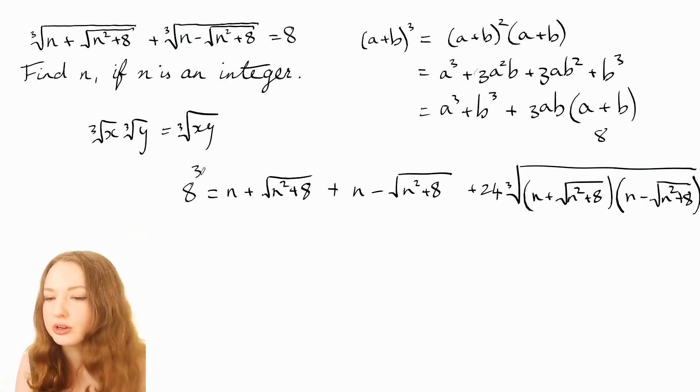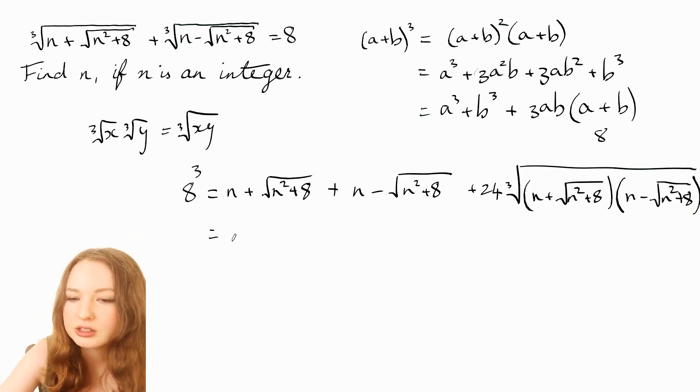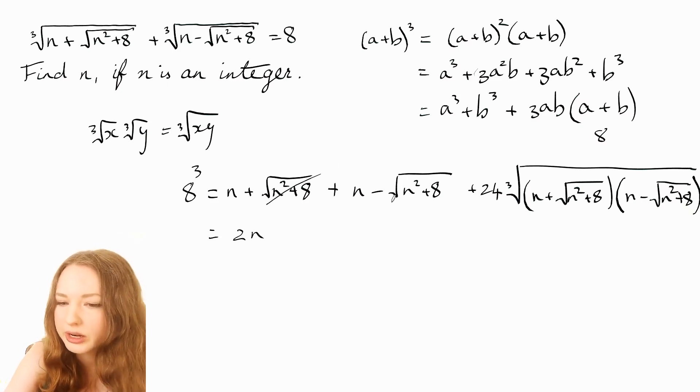Now let's see what we can do to simplify this. So we've got an n plus an n, that's 2n and then these actually cancel out so already that's much nicer.